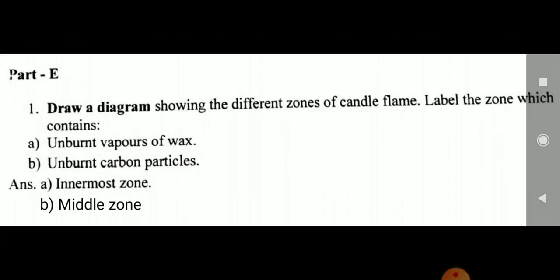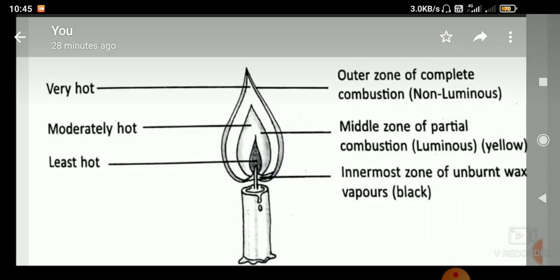Part E: Draw a diagram showing the different zones of a candle flame and label the zone which contains unburnt vapors of wax and unburnt carbon particles. The unburnt vapors of wax are in the innermost zone, and the unburnt carbon particles are in the middle zone. Draw this diagram as given in your book.